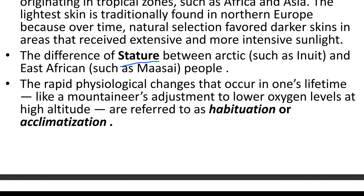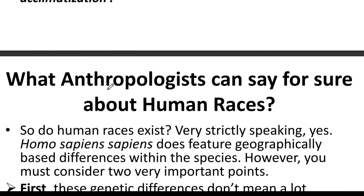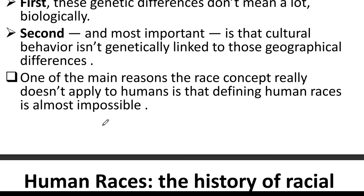Do human races exist? Strictly speaking, yes — Homo sapiens sapiens does feature geographically based differences within the species — but consider two important points: first, genetic differences don't mean a lot biologically; and second, most importantly, cultural behavior is not genetically linked to those geographical differences. One of the main reasons the race concept doesn't really apply to humans is that defining human races is almost impossible.